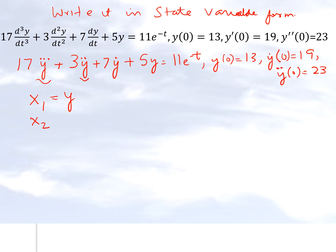Then, we say x2 is equal to y-dot. The first derivative of y is x2, but y-dot is nothing but x1-dot. Then we write x3 as y-double-dot, and that y-double-dot is nothing but x2-dot. So: x1 is y, x2 is x1-dot, and x3 is x2-dot. We want to write everything in terms of first derivative terms only.